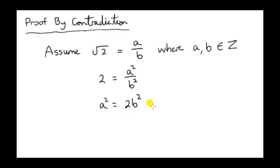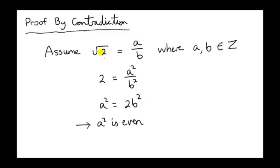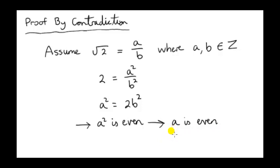We can multiply both sides by b squared to get a squared equals 2b squared. Notice that 2b squared has the form 2k, and we saw that any integer that has the form 2k is an even integer. So we've shown that the numerator must be an even number — if root 2 is a rational number, the numerator must be even. If a squared is even, it means that a is even. A cannot be odd, because if we multiply an odd number by an odd number, we always get an odd number. So a must be even.